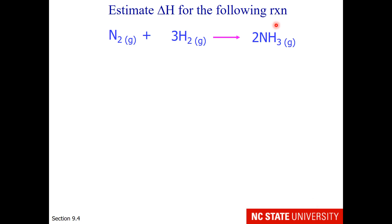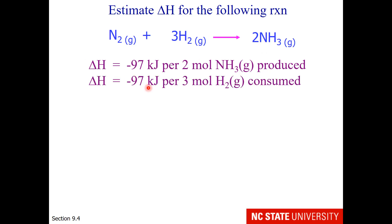I want to remind you that enthalpy is a molar quality. Therefore, this delta H is minus 97 per two moles of NH3 gas produced, because there's a two in front of that in the reaction. It's minus 97 kilojoules for every three moles of hydrogen consumed, and it's minus 97 kilojoules per one mole of nitrogen gas consumed. So the enthalpy that we have determined is for the reaction with the coefficients as written.